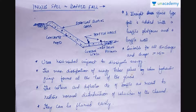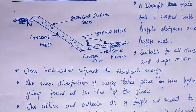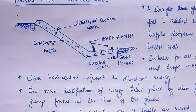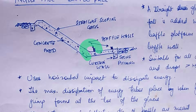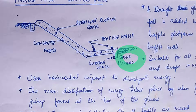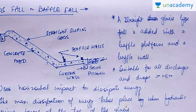There is one more type called the English fall, also called the baffle fall. Here you can see a raised crest, and after the flow comes down there are small baffle walls. It features straight sloping glacis over a concrete bed with curtain walls and stone pitching.